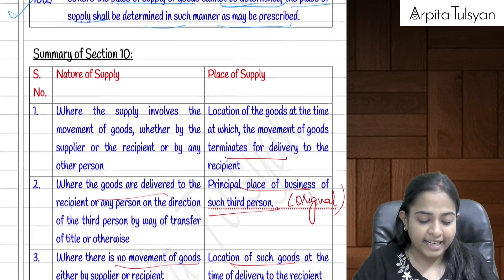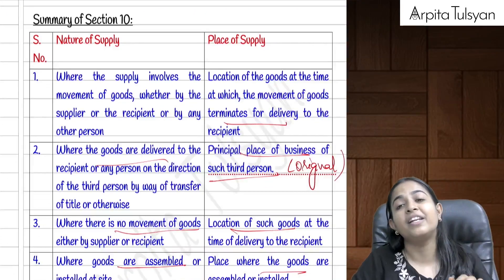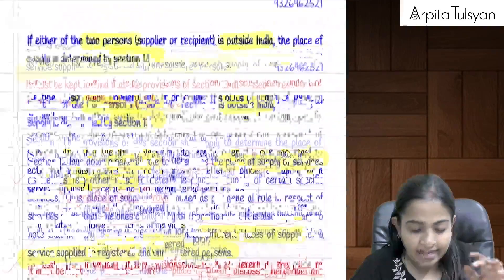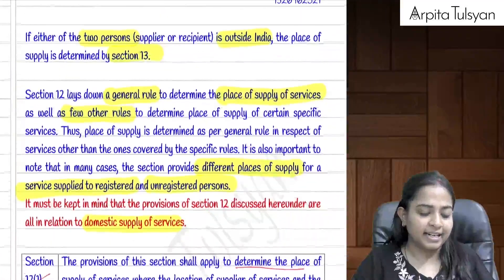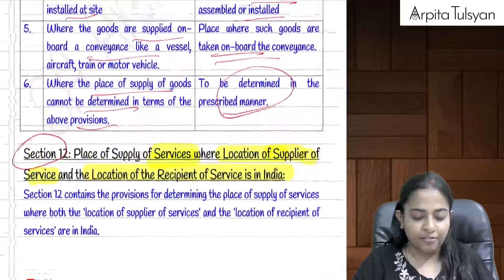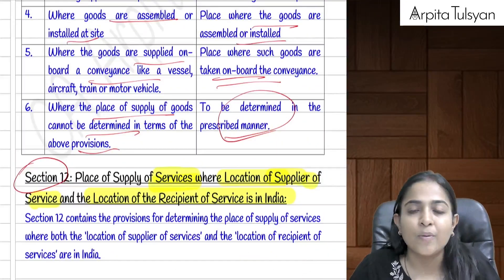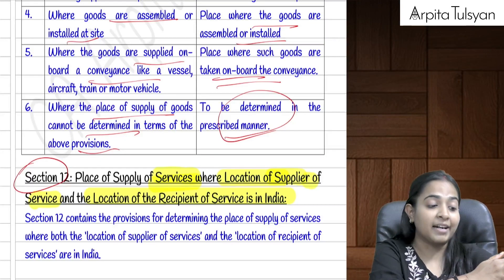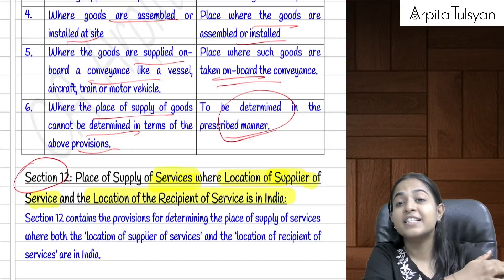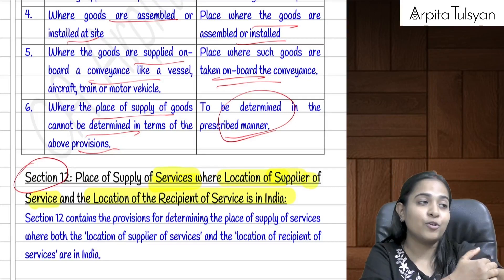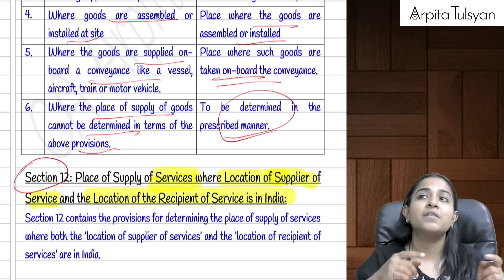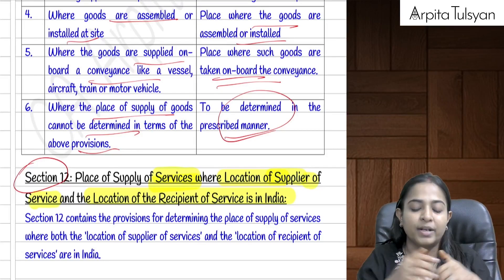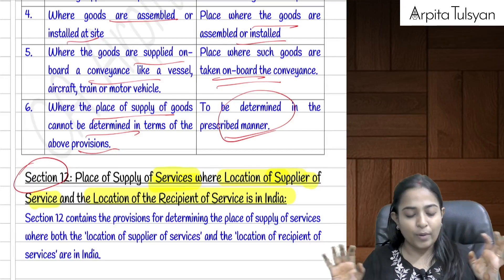For any circumstance not covered under Section 10(1), the place of supply is determined under Section 10(2) in the prescribed manner. Section 12 covers determination of place of supply for services, applicable when both the supplier and recipient are located in India.